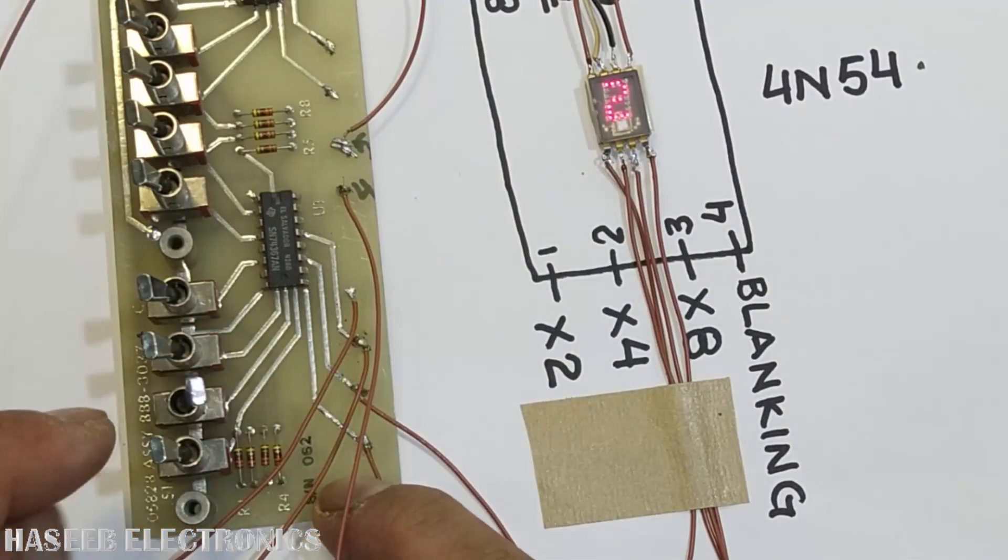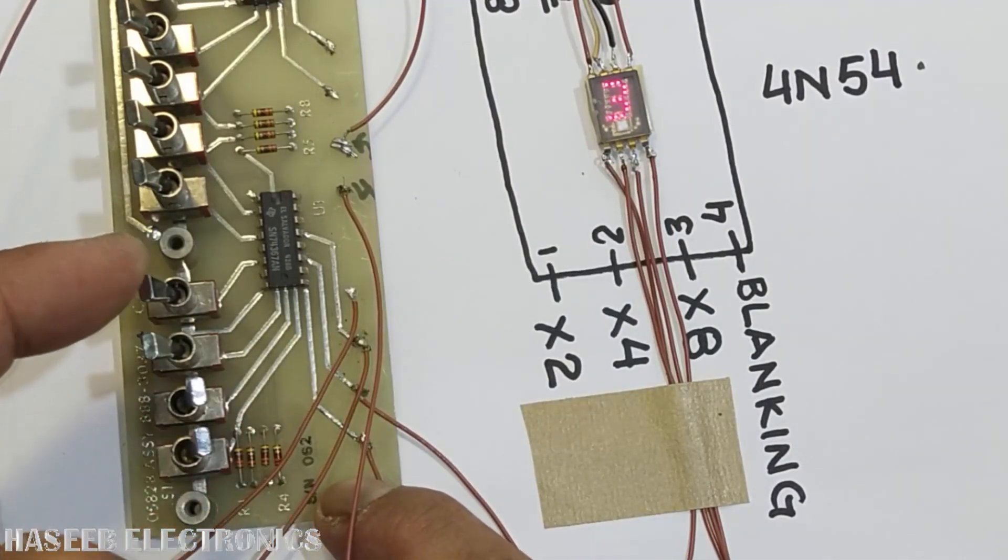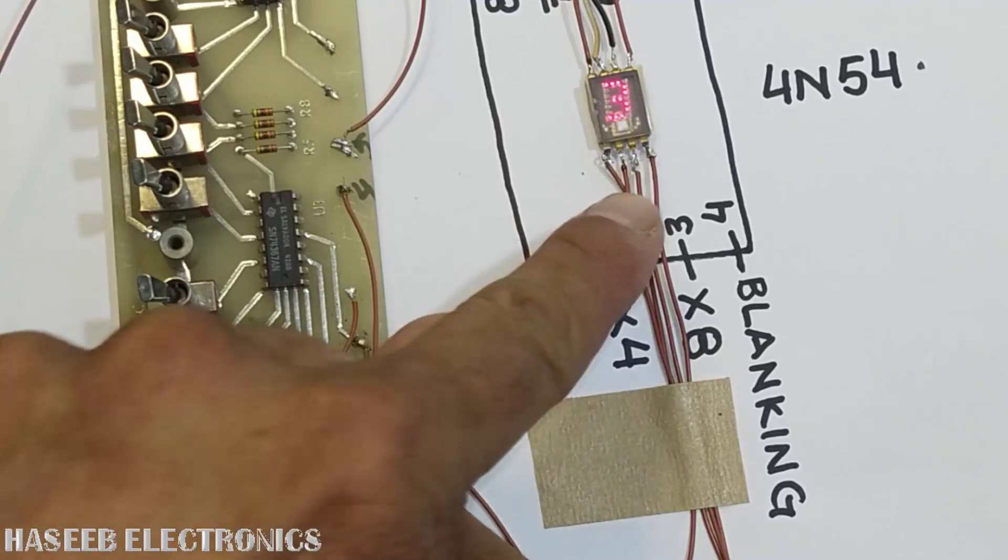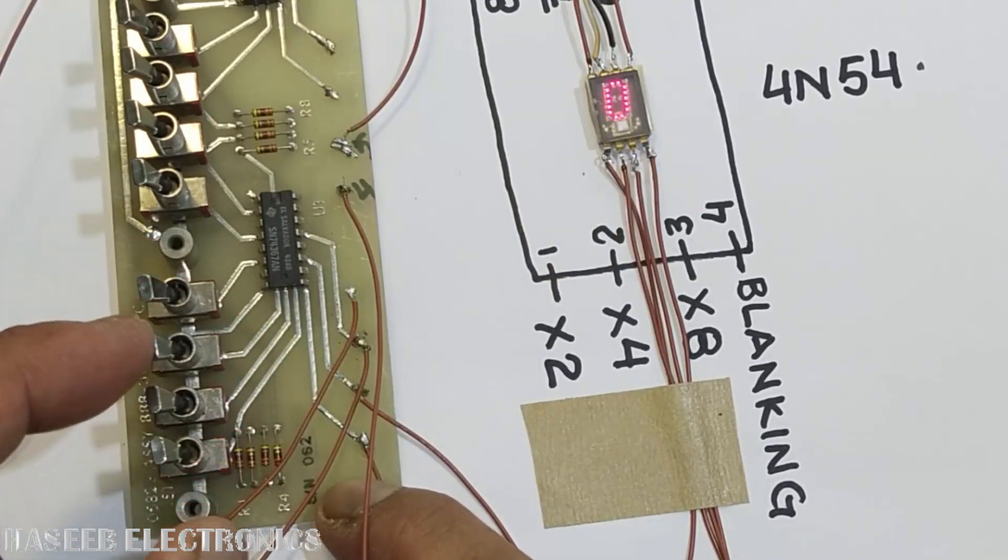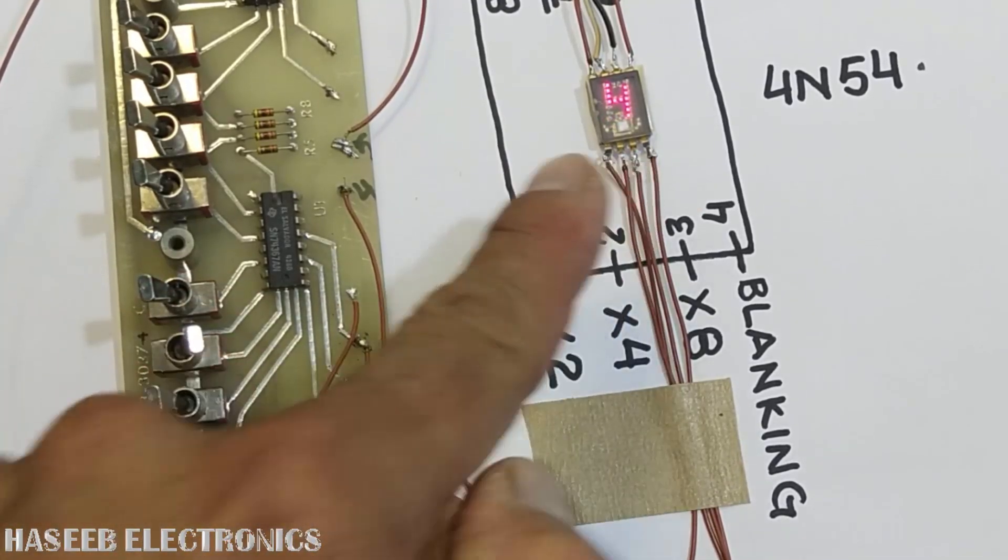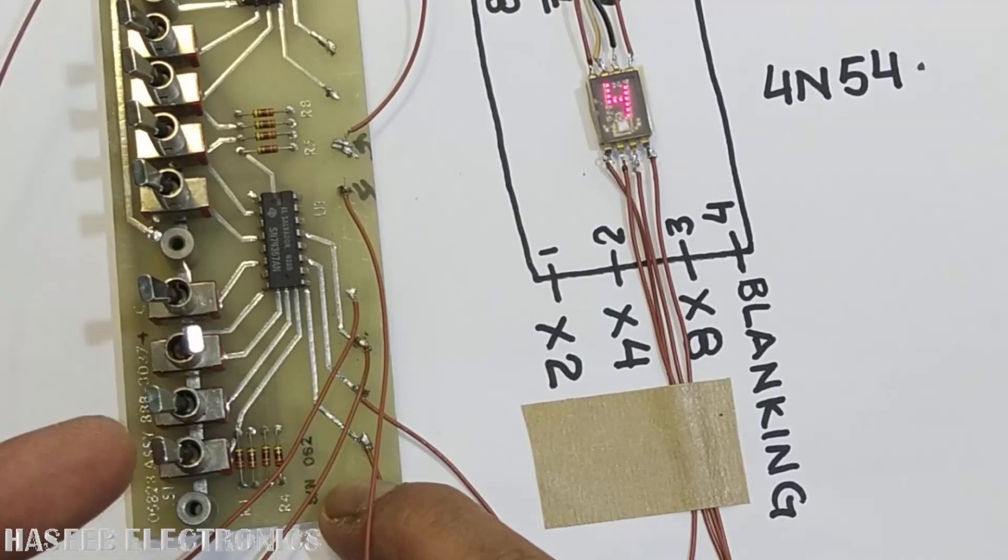It is displaying 2. 0011, that is 3. 0100, 4. 0101, 5.